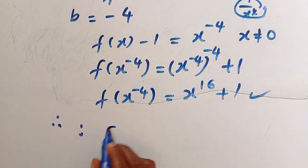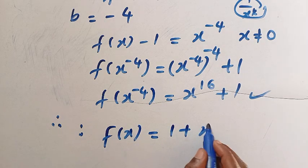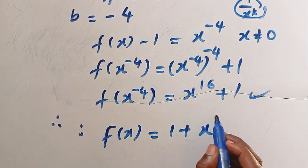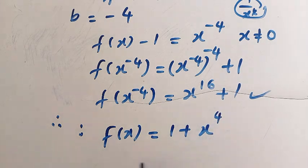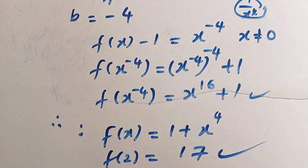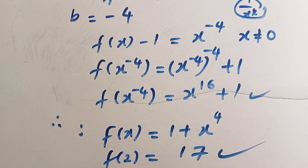Therefore, since we have verified this to be true, f of x equals 1 plus x raised to the power of 4, so f of 2 equals 1 plus 2 to the power of 4, which gives 17. This is the result for this problem. Thanks for watching — let us know how you solve it in the comment box. Never stop learning. Bye bye.